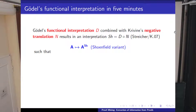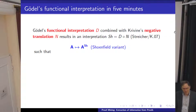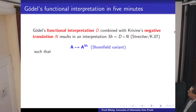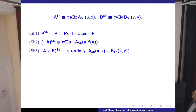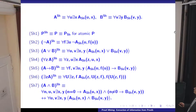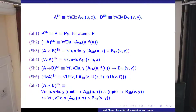Shoenfield produces, instead of exist-for-all, for-all-exist; but if you make a final Skolemization then you have the exist-for-all version. Here's just the recipe—internally this is exactly the no-counterexample interpretation. So locally you do the no-counterexample interpretation, but you do it in a nested way, and each time the types climb up.